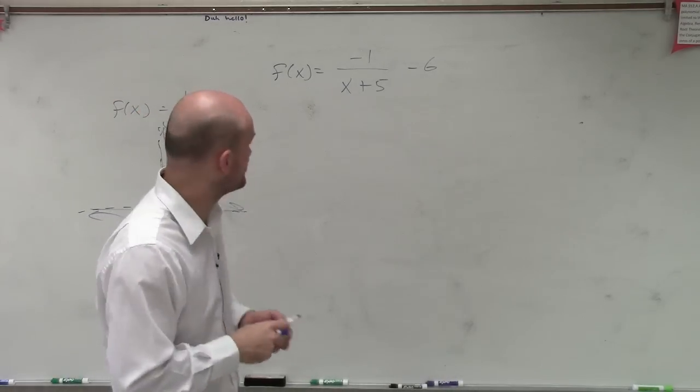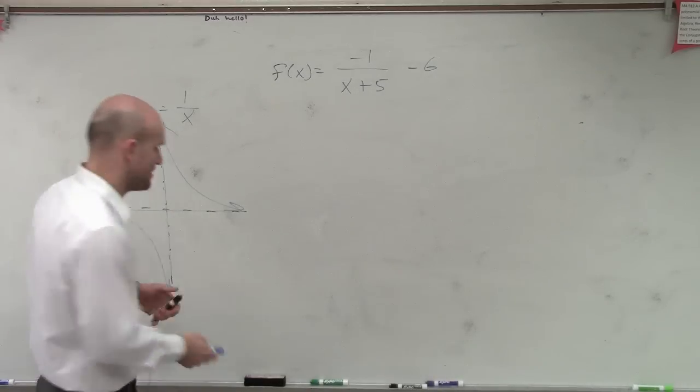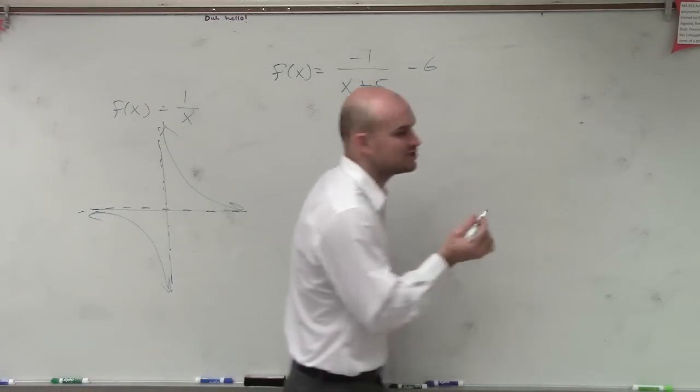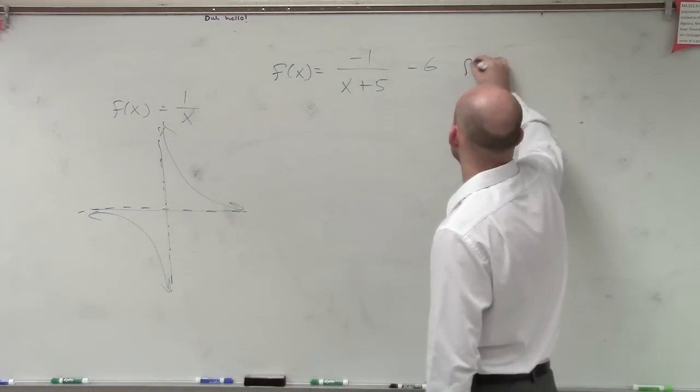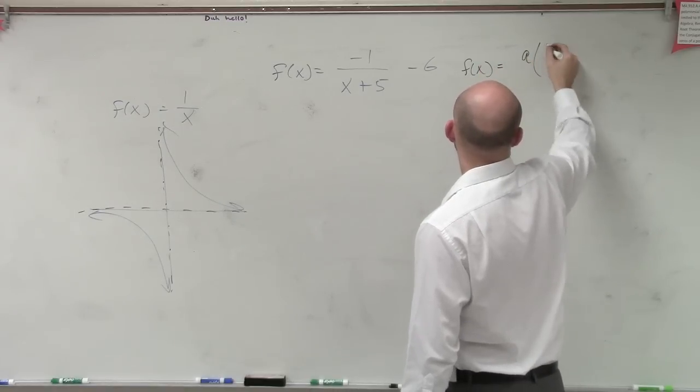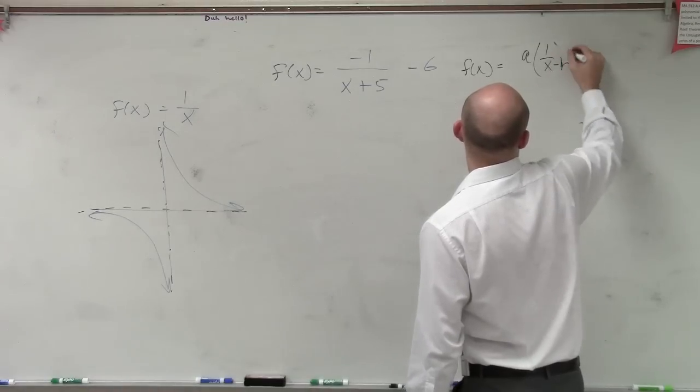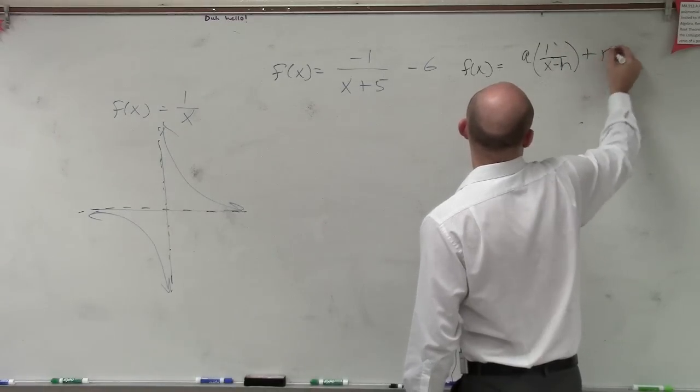Now what they're asking us to do is to graph this with our transformation. So what I'm going to do is I'm going to use transformations. So remember, the general form of my equation looks like this: f of x equals a over 1 over x minus h plus k.